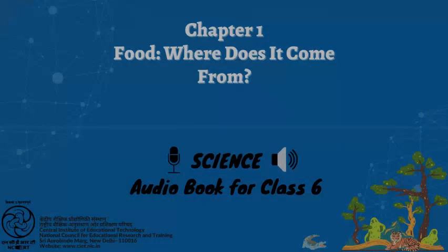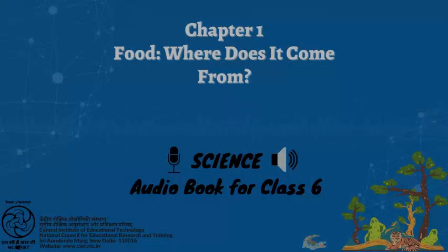Have you seen a beehive where so many bees keep buzzing about? Bees collect nectar — sweet juices from flowers — and convert it into honey and store it in their hive, as shown in Figure 1.7. Flowers and their nectar may be available only for a part of the year, so bees store this nectar for their use all through the year. When we find such a beehive, we collect the food stored by the bees as honey. Figure 1.7 shows a beehive.